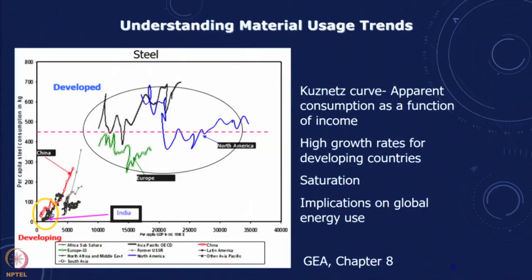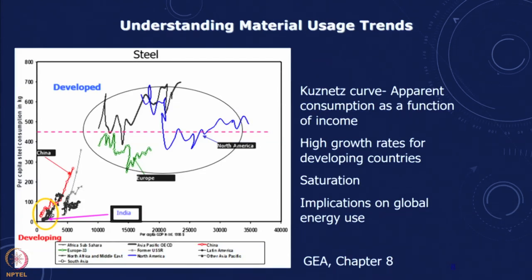If you look at steel, you see different countries — North America, Europe — and you can see China and India here. This corresponds to a stagnation level of about 450 kg per person per year. It is an apparent consumption as a function of income: high growth rates for developing countries, going to saturation, with implications on global energy use.